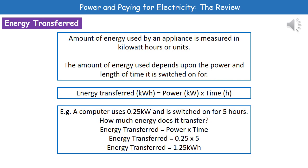If we're considering how much energy an appliance actually uses in a given time, then what we're looking at is something called kilowatt hours, or units. The amount of energy our appliance is going to use depends on two things: first, the power of it, and second, how long we're actually leaving it switched on for.